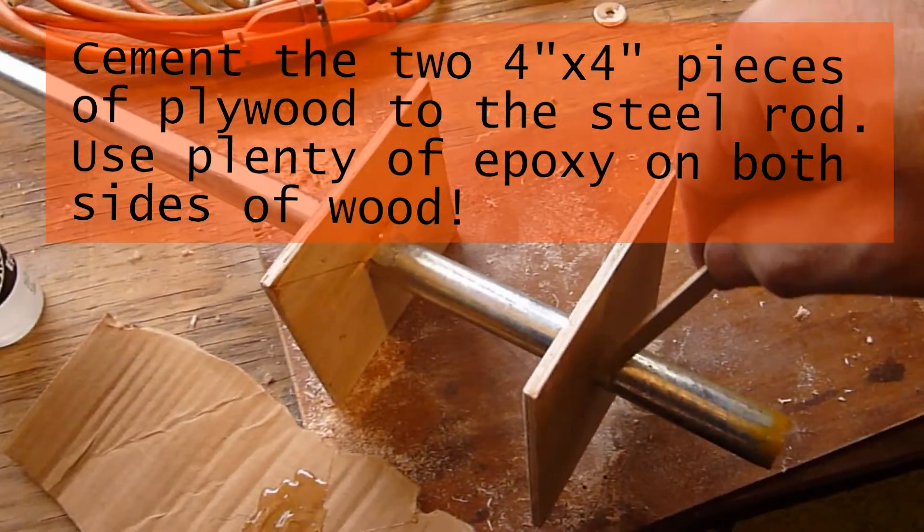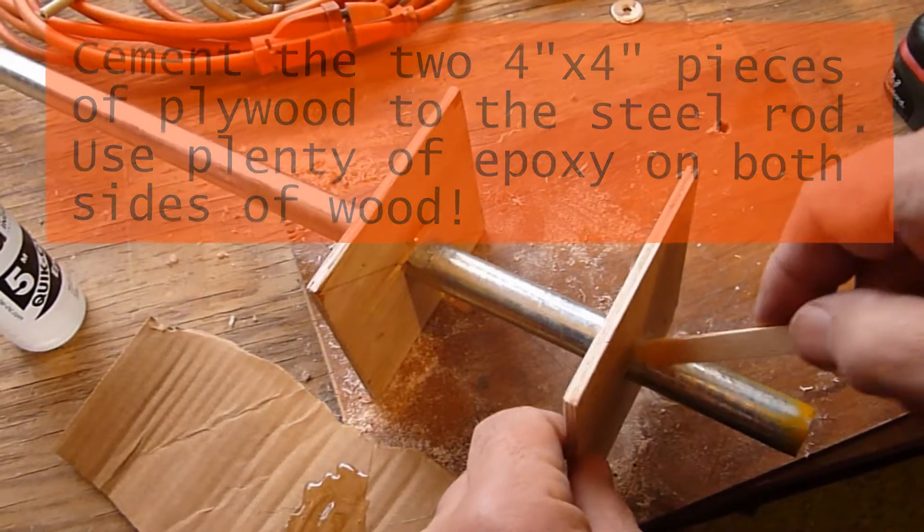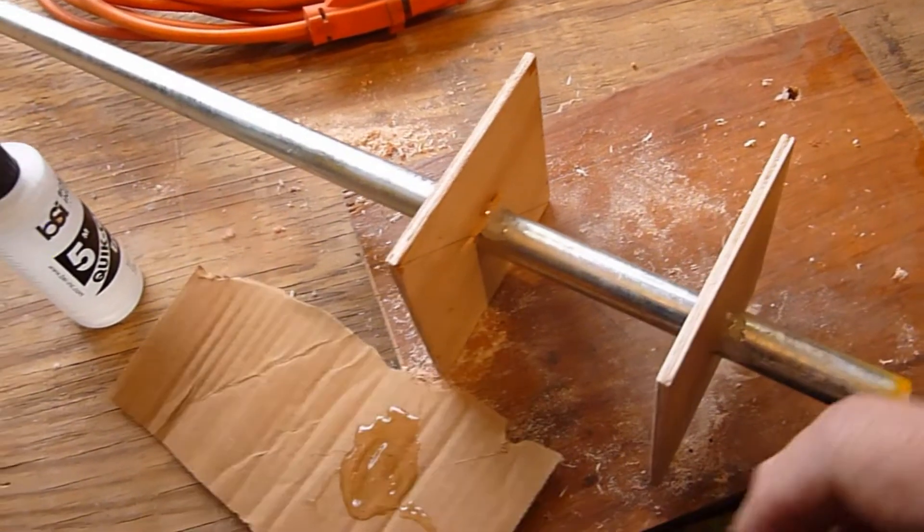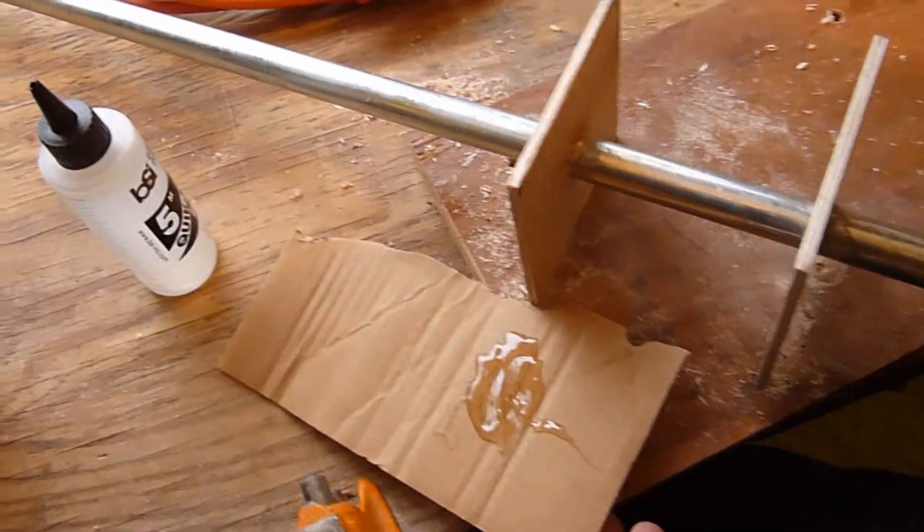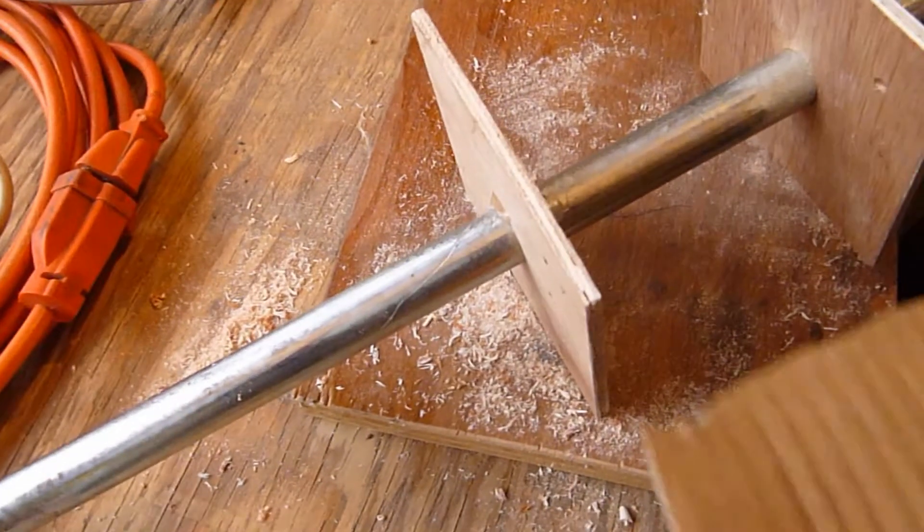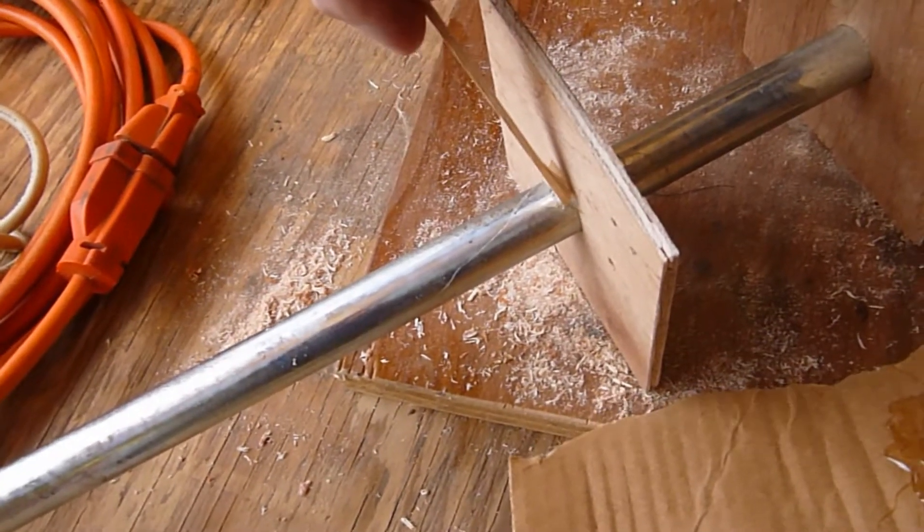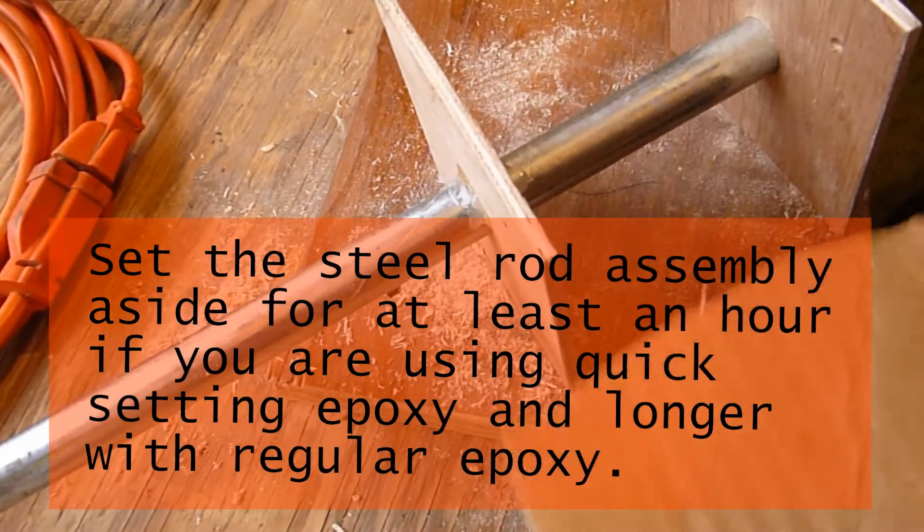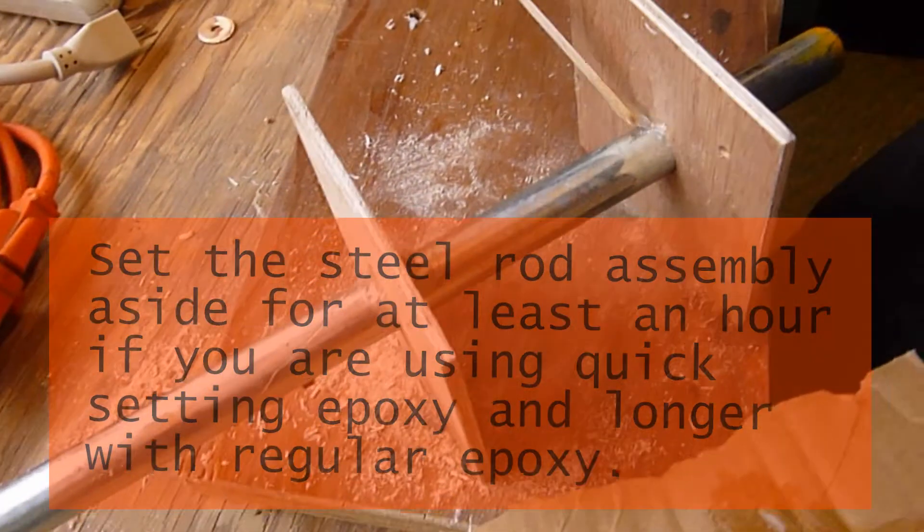Next cement the two 4 inch by 4 inch pieces of plywood to the rod. Use plenty of epoxy on both sides of wood but don't use too much so it slops over on the metal. Let the epoxy set for at least an hour if you're using the quick setting epoxy and longer if you're using regular epoxy.